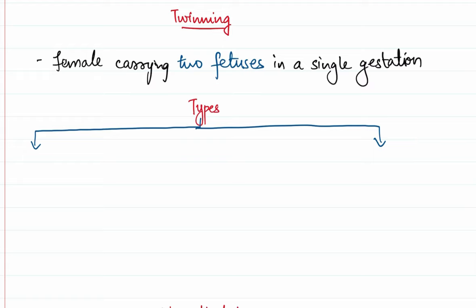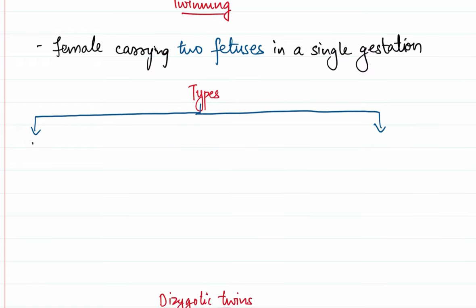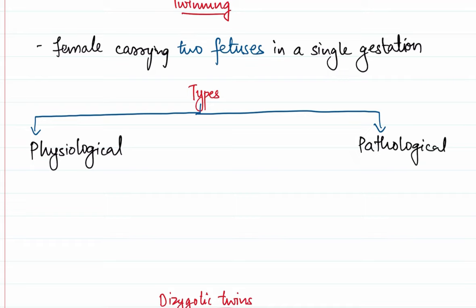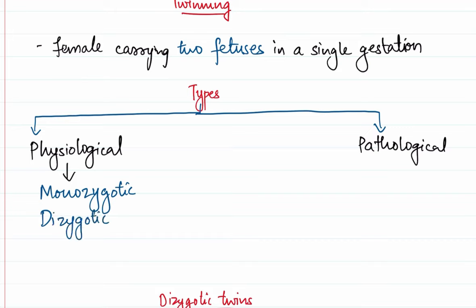Now the types of twinning — and this is a classification I have personally made, it's not found in the textbooks. Twinning could actually be physiological or pathological. Physiological means that once labor has occurred, the twins can continue their life easily. Pathological means there is difficulty in the life of one of the two babies. Physiologically, twins could be monozygotic or identical twins, or dizygotic or paternal twins. Pathologically, they could be conjoined twins or parasitic twins.